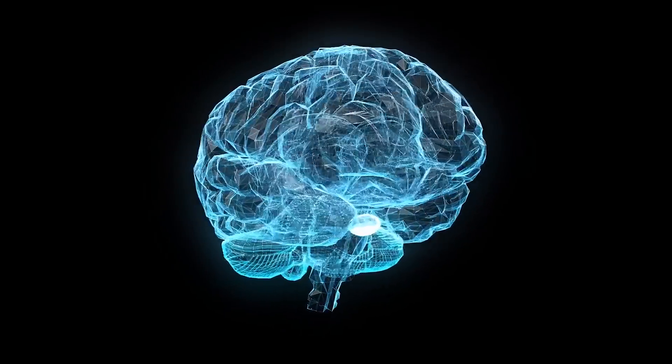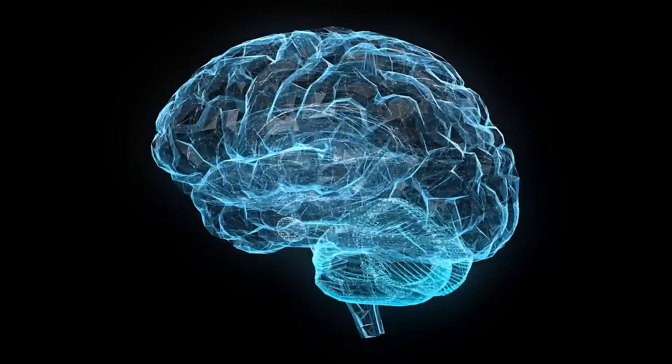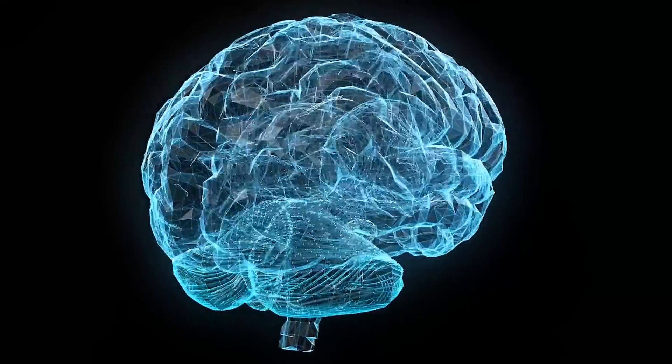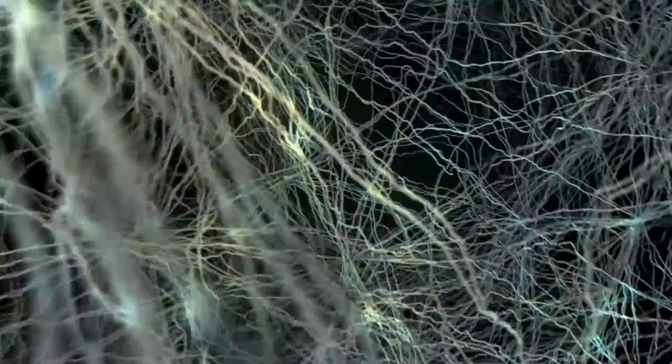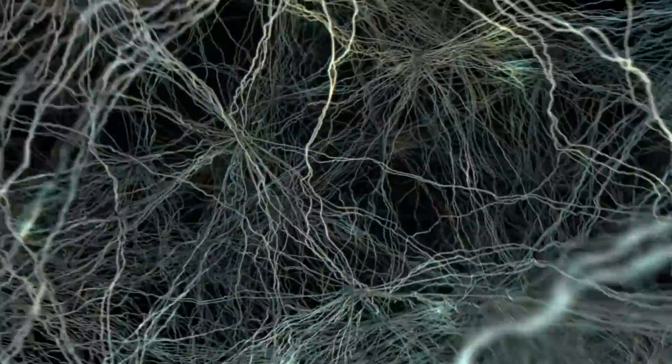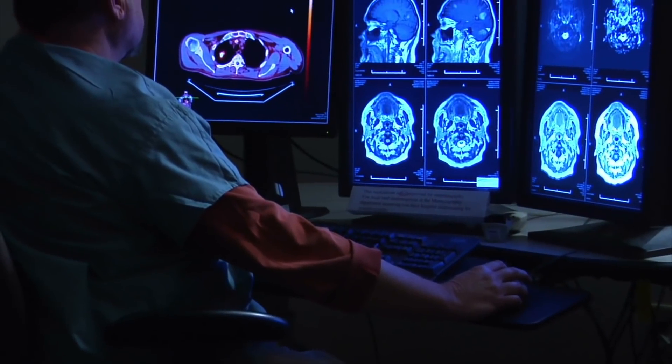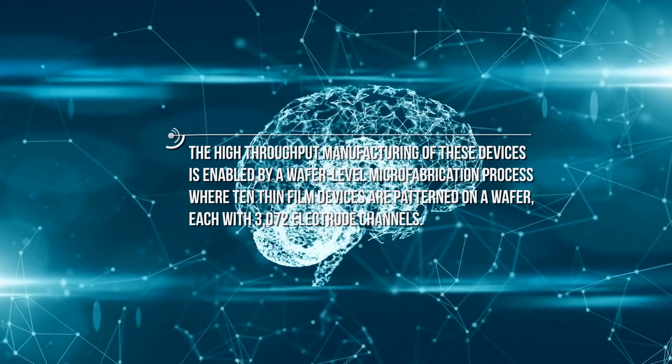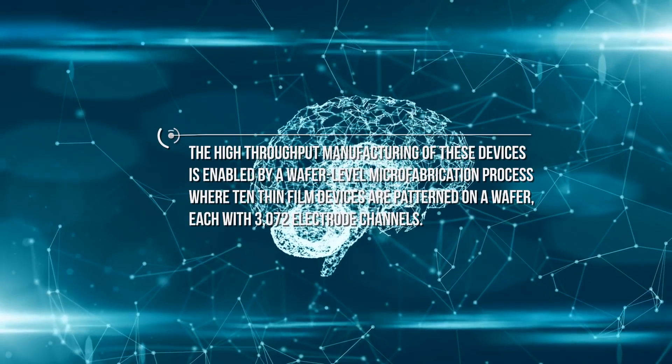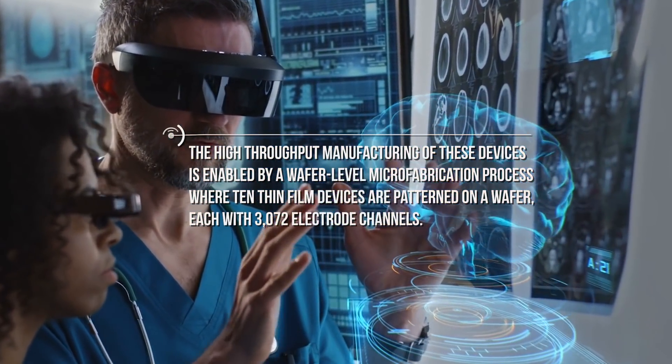Polyimide is the main dielectric and substrate used in these microelectrode probes where they encapsulate a gold thin-film trace. Each thin-film array is composed of a thread area featuring electrode contacts and traces along with a sensor area where the thin-film interfaces with custom chips to enable signal amplification. The high-throughput manufacturing of these devices is enabled by a wafer-level microfabrication process where 10 thin-film devices are patterned on a wafer, each with 3072 electrode channels.